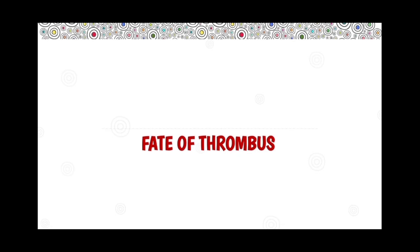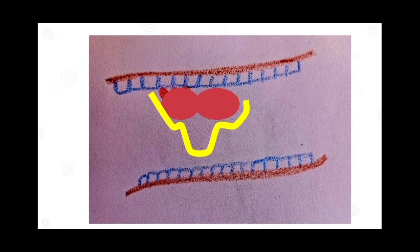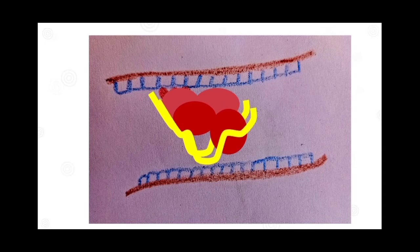Now, an important part of thrombosis is the fate of the thrombus. There are four major fates: propagation, embolization, dissolution, and organization and re-canalization. Propagation means more platelets and fibrin are deposited onto the thrombus, causing it to grow larger.